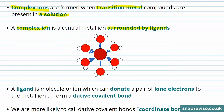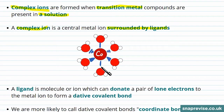A complex ion is a transition metal, like cobalt, surrounded by these ligands, which in this case are water. But there are other chemicals that can act as ligands in solutions.